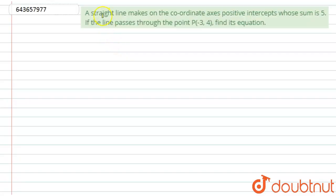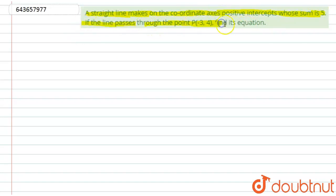Let's start with the question. Here we have given: a straight line makes on the coordinate axes positive intercepts whose sum is 5. If the line passes through the point P(-3, 4), find its equation.